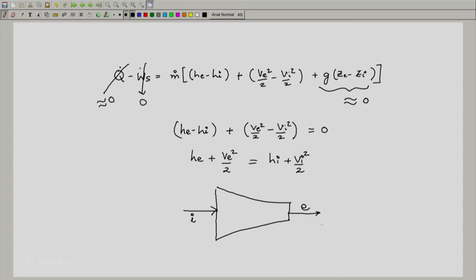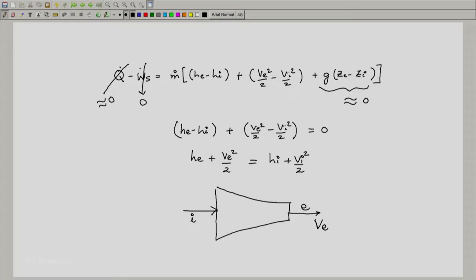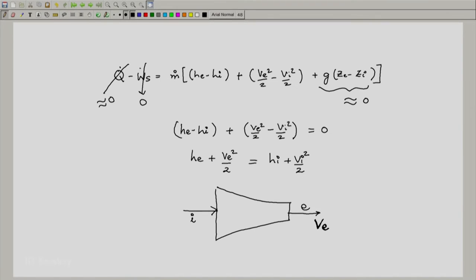What we really get out is v_e. We can assume negligible the inlet velocity even if it is there, it is much smaller than v_e. This is really what we are interested in, v_e, and typically this is what is written.